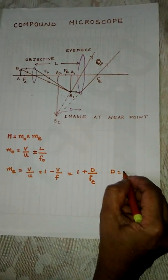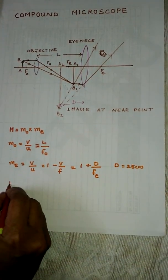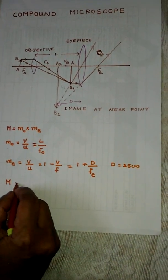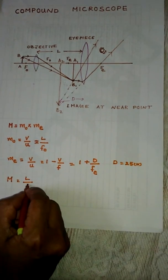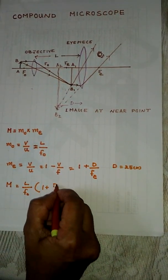Therefore, the total magnifying power M is equal to L by FO times 1 plus D by FE.